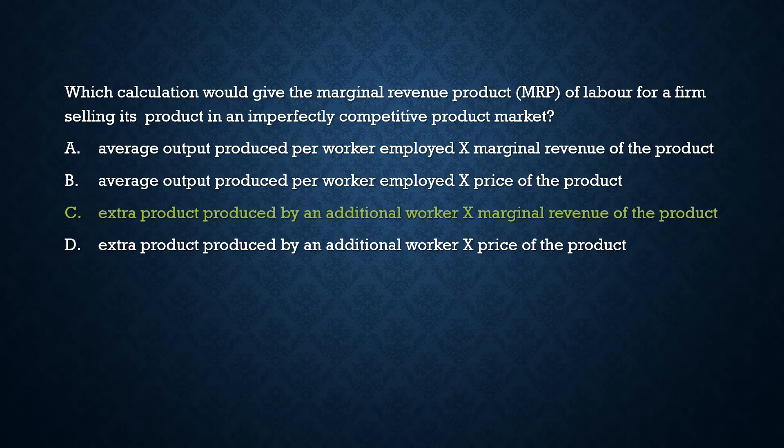So once again: which calculation gives the marginal revenue product of labor for a firm selling in an imperfectly competitive market? The answer is the extra product produced by an additional worker multiplied by the marginal revenue product. Option C is correct.